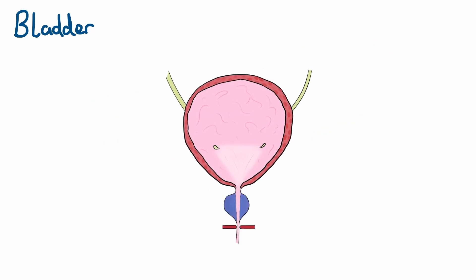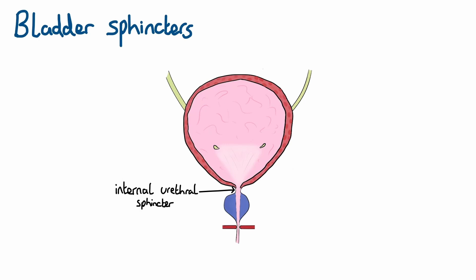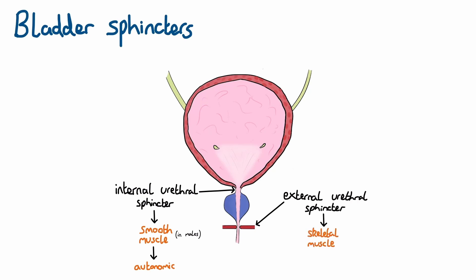The urethra has two muscular sphincters. The internal urethral sphincter in males is made of smooth muscle and functions to prevent retrograde movement of semen during ejaculation. As it's made of smooth muscle, it's under autonomic control, i.e. non-conscious control. The internal urethral sphincter in females does not contain muscle but is anatomically formed by the bladder neck and proximal urethra. The external urethral sphincter is made of skeletal muscle and is therefore under somatic, or conscious, control.